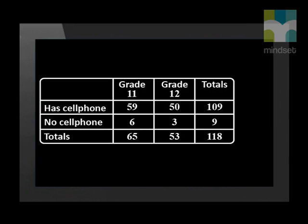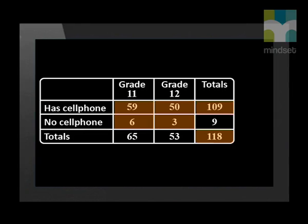This two-way contingency table shows that 59 grade 11s have cell phones, 50 grade 12s have cell phones, 6 grade 11s and 3 grade 12s don't have cell phones. In total, 118 learners were surveyed. 109 of them had cell phones and 9 of them didn't. 65 of the 118 are grade 11 learners and 53 of them are grade 12 learners. Once the information is tabulated in the table, it's really easy to answer these questions.